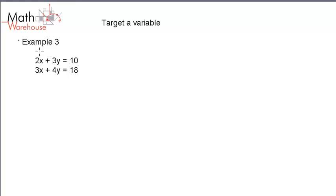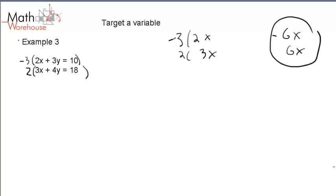How can I get them to be additive inverses? I've got a 2x, I've got a 3x. If we make both of them 6x, or make one of them negative 6x and one of them positive 6x, we're good. We have to multiply the top equation by negative 3, the bottom equation by 2. Then we will have our nice additive inverse that we want.